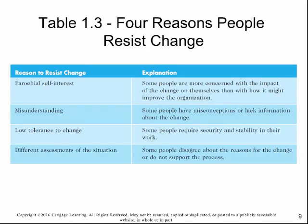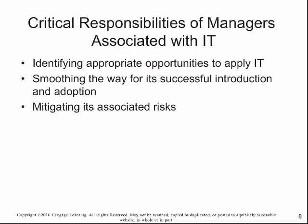There are tables 1.3 and 1.4 that I want to point out to you. The part about identifying the opportunities is important, but then smoothing the way for successful introduction and adoption is key. There are two things here: reasons why people resist, and the change management model. The text also talks about IT adoption and the unified theory of information technology adoption — it's a long title, but you'll see it — about why people adopt and use technology.